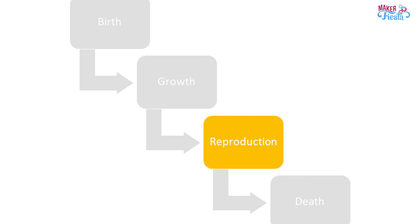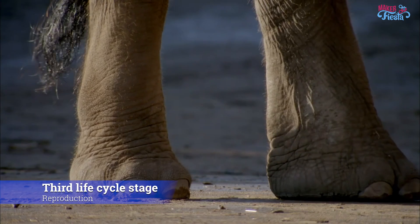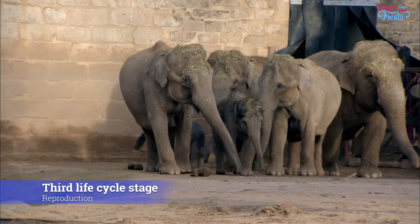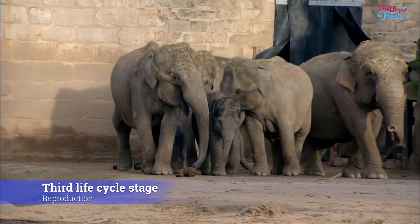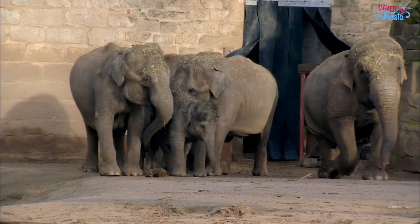Once an animal reaches adulthood, it can reproduce and create offspring. Babies get their traits and characteristics from their parents, like how they look, behave, and what genes they have.